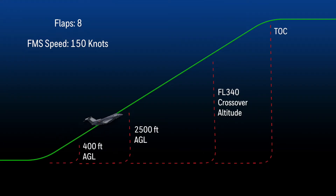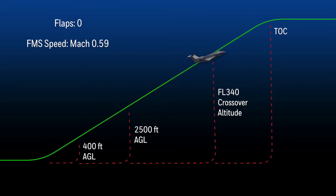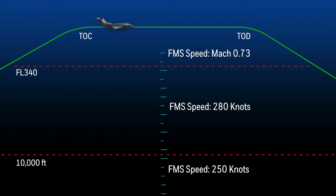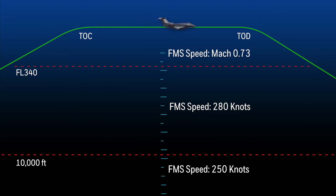As the aircraft continues the climb to altitude, the FMS target speed will change to Mach 0.59 at flight level 340. When the aircraft reaches the cruise altitude, the target speed changes to the cruise speed set in the altitude and speed tab in the preflight window. The Mach number is targeted when the cruise altitude is above flight level 340.